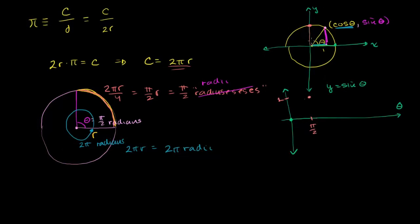If we go 180 degrees, or halfway around the circle, theta is now equal to pi. When theta is equal to pi, the y-value of this point is once again 0, so we go back to 0.